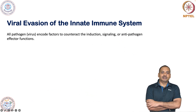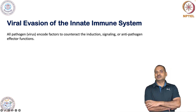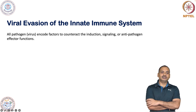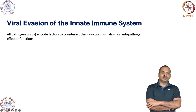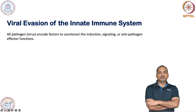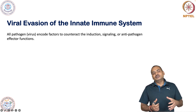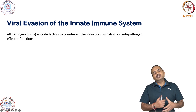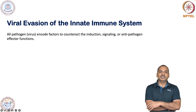There are various viral evasion strategies of the innate immune system, and there are some molecules which are used for evasion of innate immunity. It is not only viruses that have an evasion strategy — all pathogens have a strategy. They encode some factors to counteract the induction, signaling, and antipathogen effector functions. Overall, they make some proteins, some molecules, some methods by which they can evade the host defense mechanism, irrespective of innate or adaptive immunity.